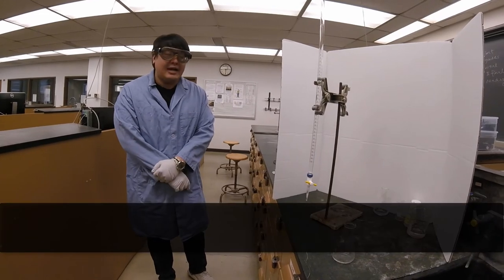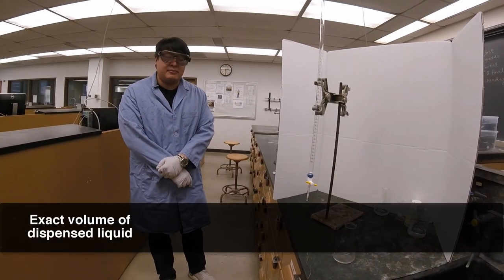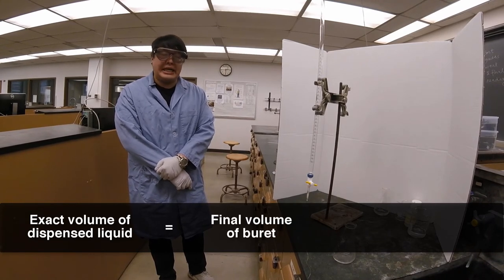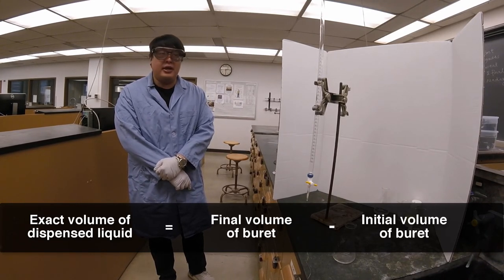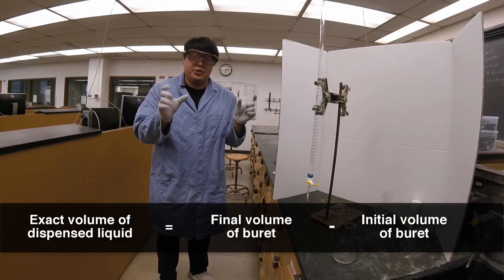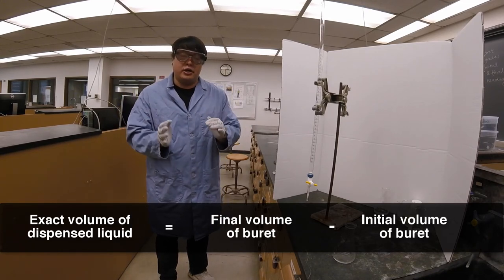To calculate the exact volume of the liquid dispensed from the buret, you want to take the final volume minus the initial volume. And that is why it's really important you get the initial volume and the final ones, because you need to do the difference to actually find the volume dispensed.